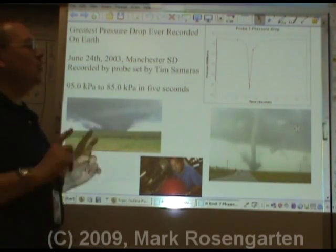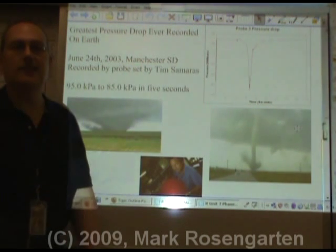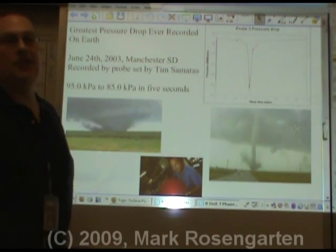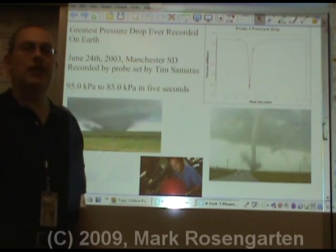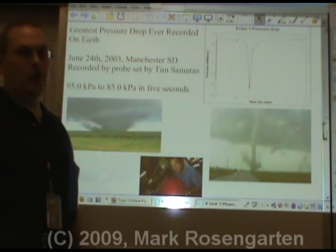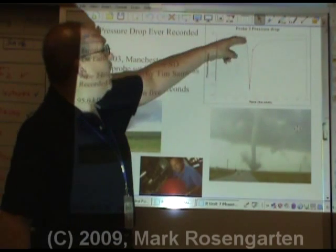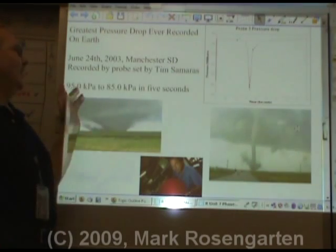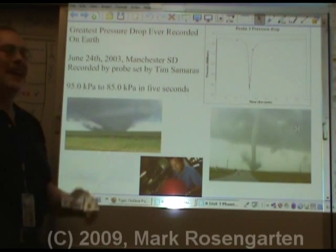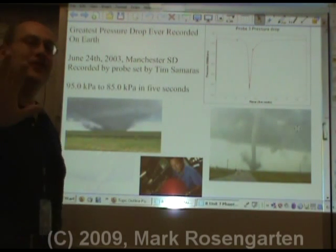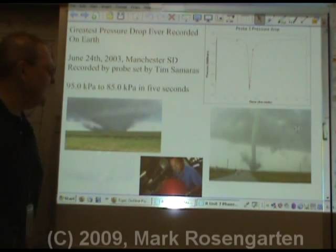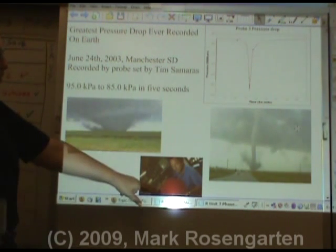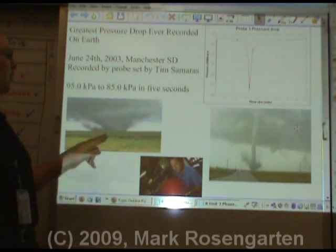The greatest pressure drop ever recorded was on June 24th, 2003, in what was once the town of Manchester, South Dakota. Storm chaser Tim Samaras put out a probe that recorded a 100-millibar drop — a 10 kilopascal drop — over the space of just five seconds as an F4 tornado passed over it. Here's a picture of the probe.